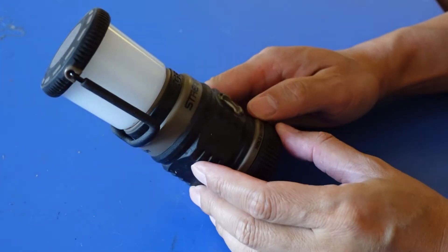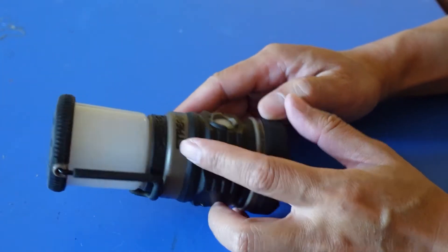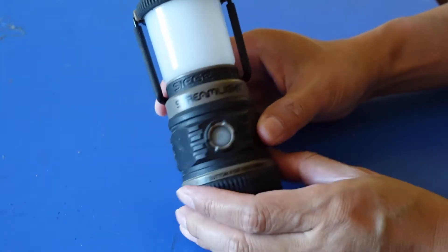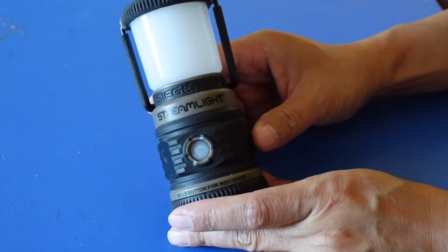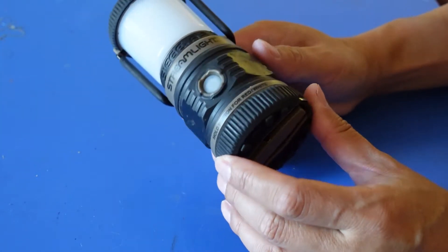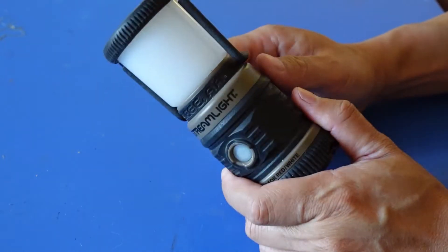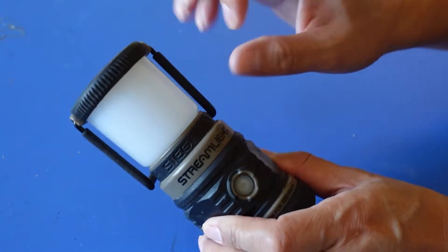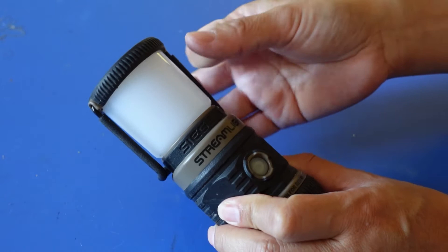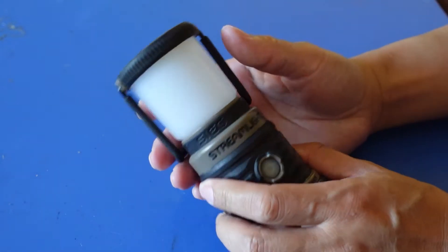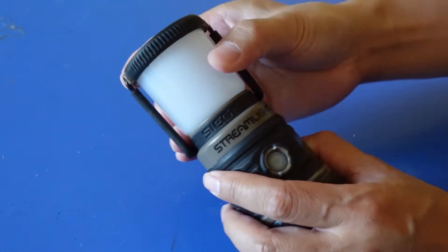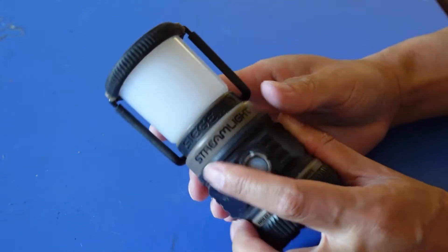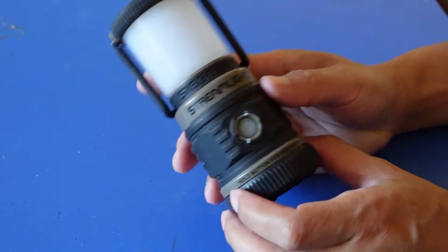I have this Streamlight Siege AA Camping Lantern. I like it a lot and it's really rugged. This is hard plastic. You can't really break it and if it drops in the water, it will float.